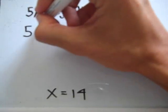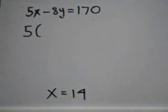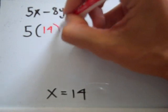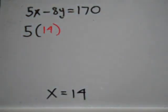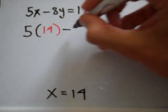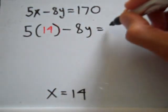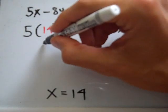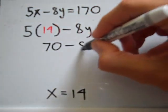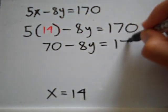So 5 times x, where x is 14, replacing x with 14, I have 5 times 14 minus 8y is equal to 170. 5 times 14 is 70. So 70 minus 8y is equal to 170.